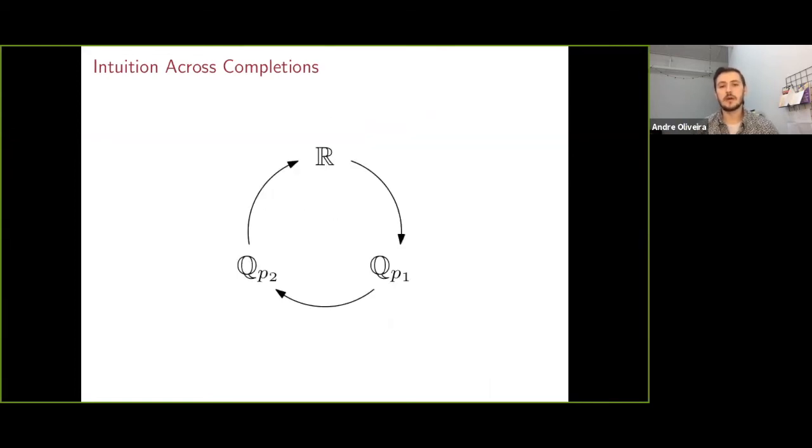And so maybe as a picture to keep in mind, what we can do is take a ball inside of any completion of Q, R, Qp1 for some prime p1, Qp2 for some other prime p2, and we take the rationals inside that ball and go on to another completion of Q,